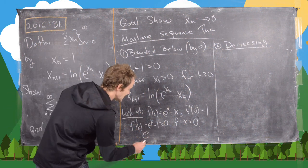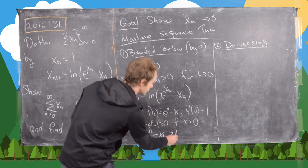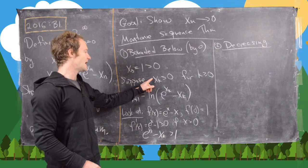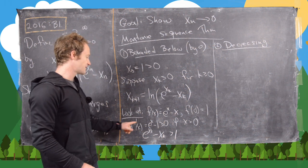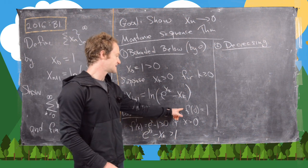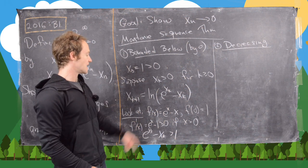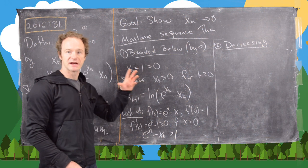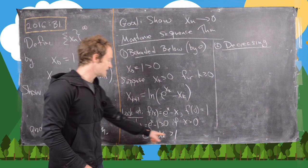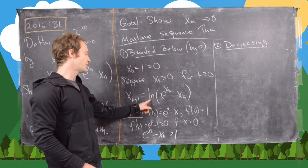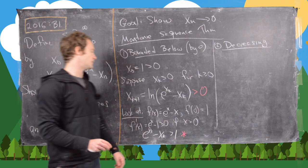Since f is increasing and f(0) = 1, we know that eˣᵏ - xₖ is greater than 1 because xₖ > 0 by the induction hypothesis, and f(xₖ) > f(0) = 1. The fact that this value is greater than 1 means that when we take the natural log, we get xₖ₊₁ > 0. So we've shown that xₙ > 0 for all n.